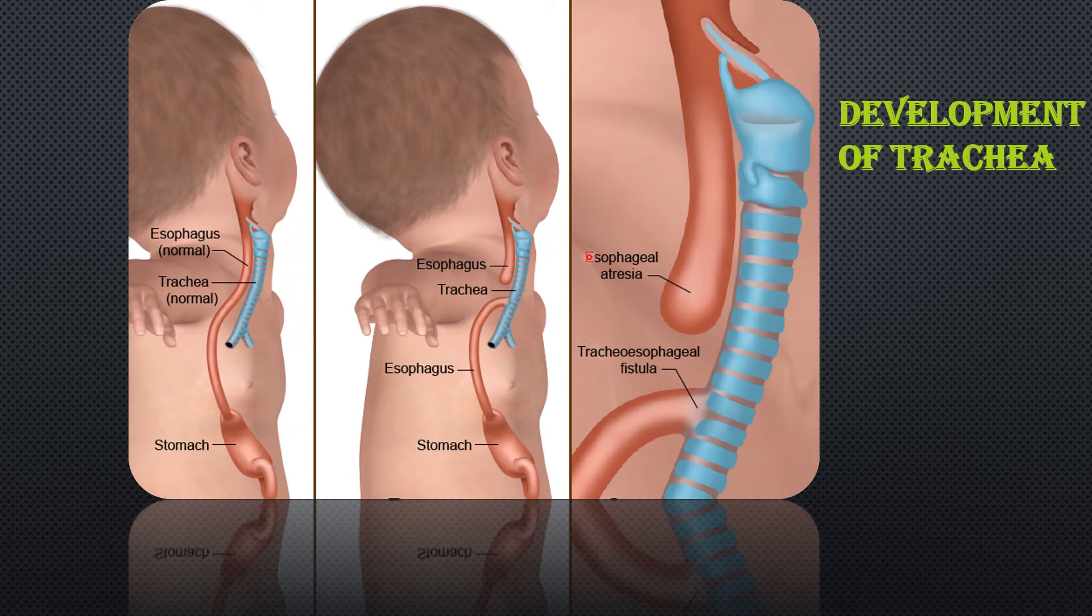But in case of abnormal birth defect, if there is abnormal formation of the tracheoesophageal septum, the esophagus may be connected to the trachea. This condition is called a tracheoesophageal fistula.